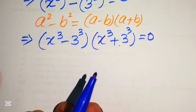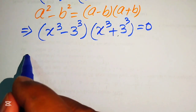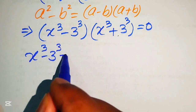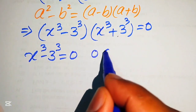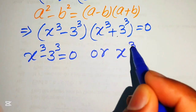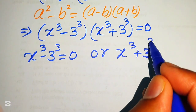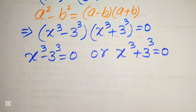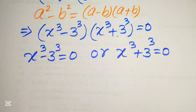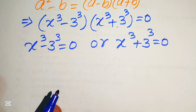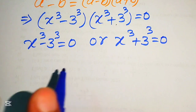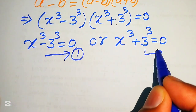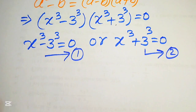According to this formula our equation becomes x cubed minus 3 cubed times x cubed plus 3 cubed equals 0. This implies that either x cubed minus 3 cubed equals 0 or x cubed plus 3 cubed equals 0. We call these equation number one and equation number two, and we solve them one by one.